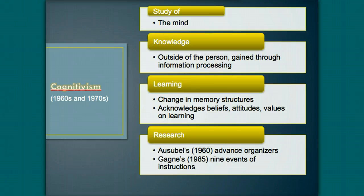According to Cognitivism, the transfer of knowledge to new situations is influenced by the way information is presented and the relevance of information presented. If information is presented poorly or too much irrelevant information is associated with relevant information, it may be difficult for the learner to sort and organize the information. This, in turn, can have an impact on the storage, retrieval, and transfer of information.